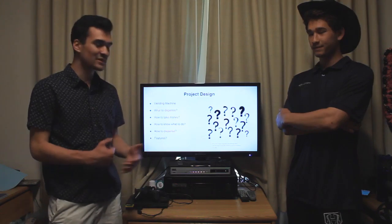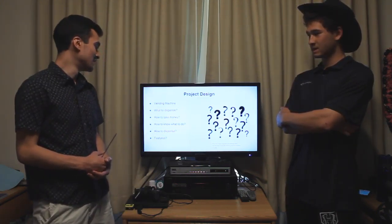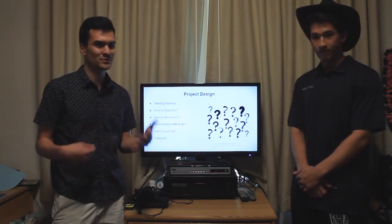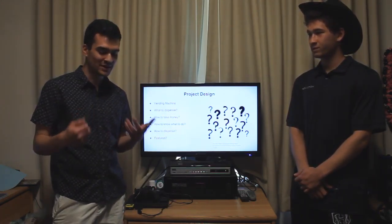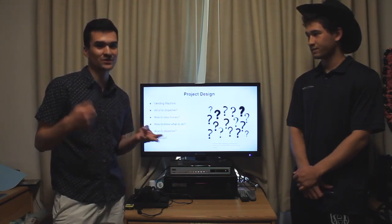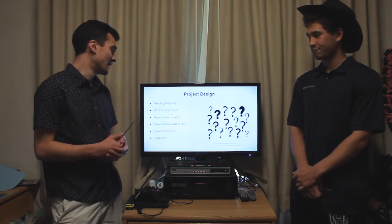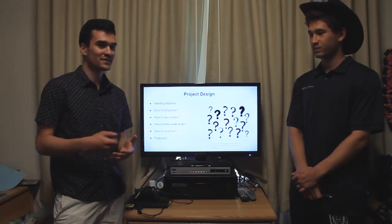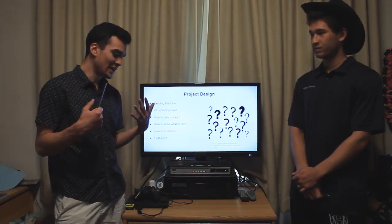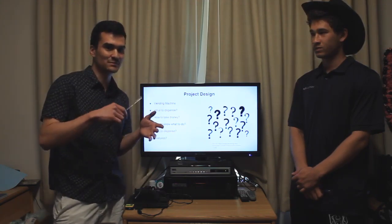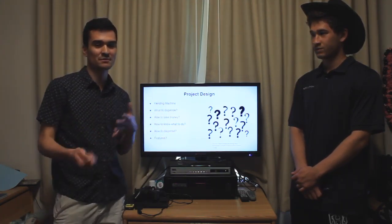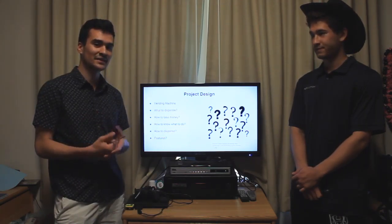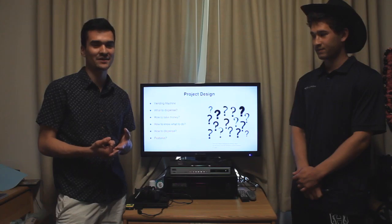These are the types of questions we considered when implementing the design. We were thinking: what is it going to dispense? What kinds of different things could be dispensed if we decided on candy? What kind of money can it take — quarters, dollars, nickels, pennies? How does it know when we've put enough credit in so that it can dispense? How will it dispense — how will it actually move objects through some mechanism? And finally, what other features could we add onto the vending machine?